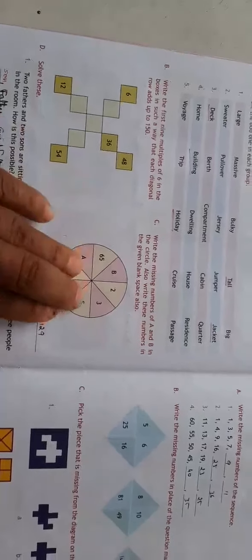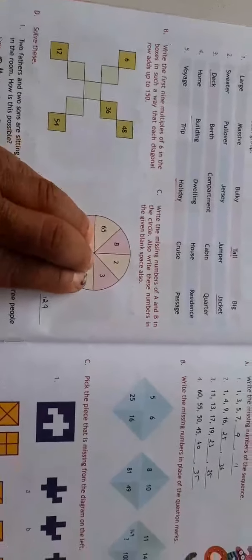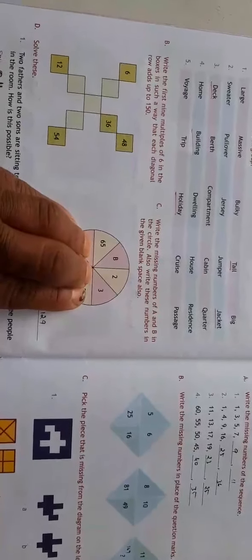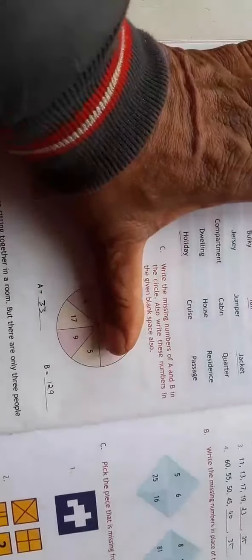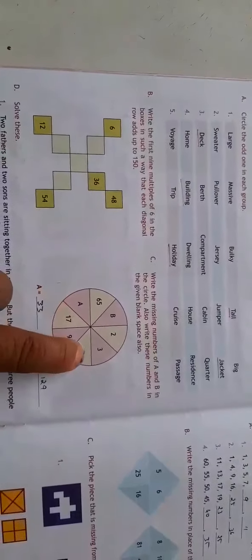If we take this together, it will become a linear pair. Sum of all the angles is equal to 180. So I will add all these and subtract from 180, I will get the answer.